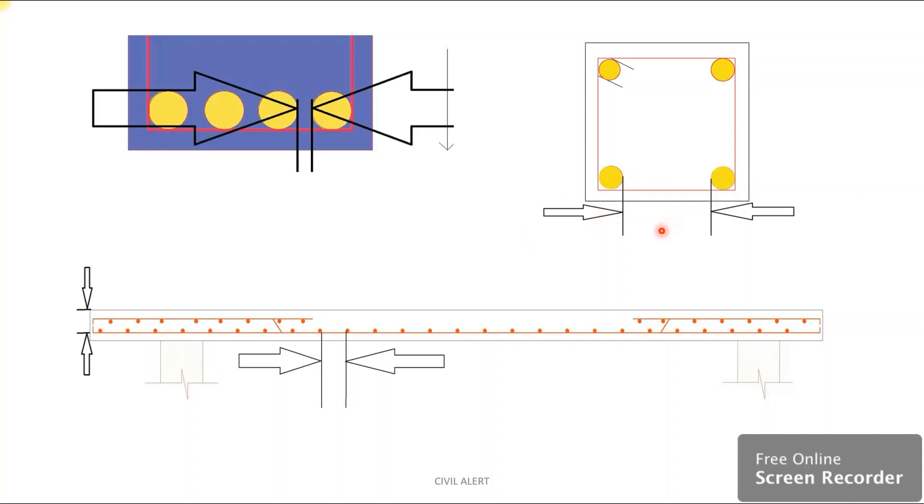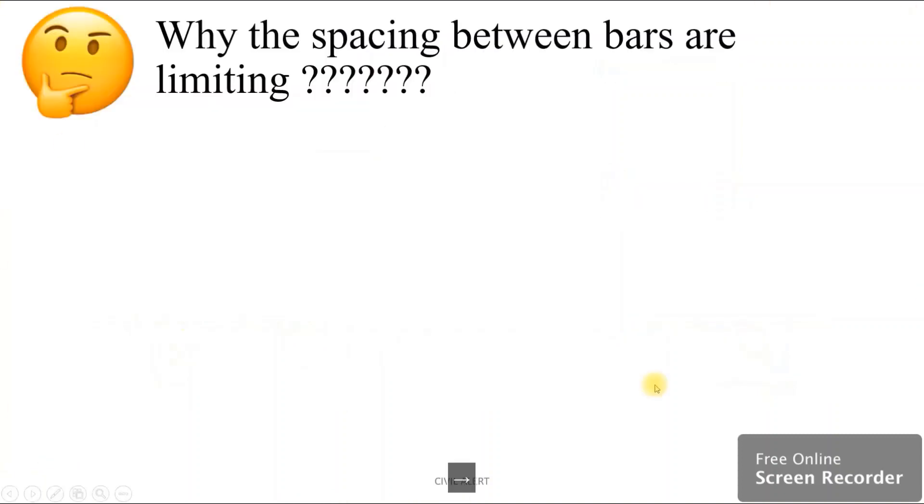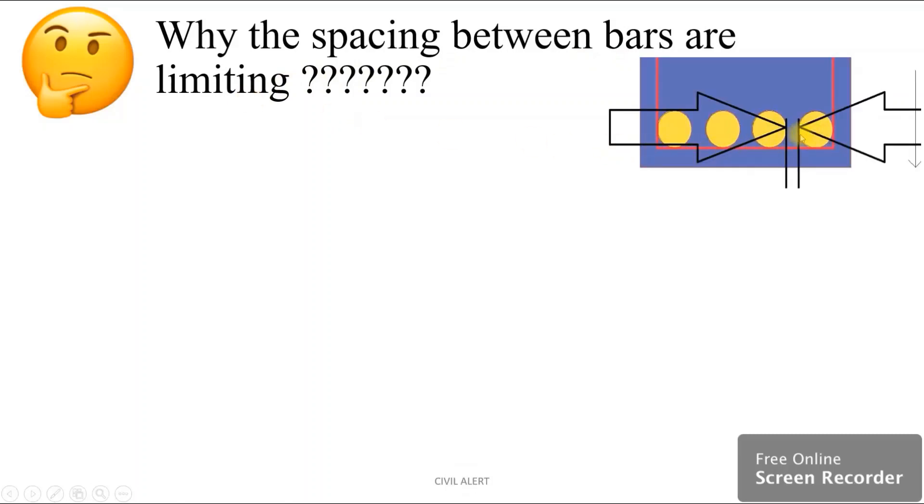This is the spacing between bars. Why is the spacing between bars limiting? There are minimum values and maximum values.